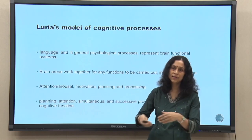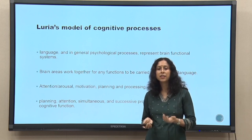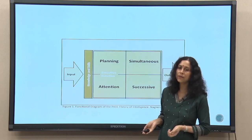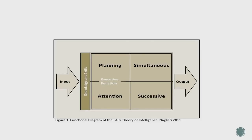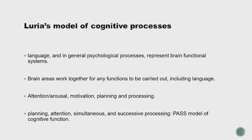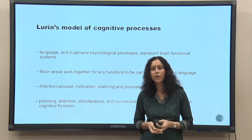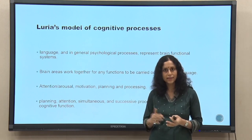The PASS model refers to Planning, Attention, Simultaneous, and Successive processing — what is at the core of any psychological process, including language. The first and foremost is paying attention; Bandura also retains this. Then there is arousal — asking what is to be done — followed by motivation, planning, and processing. So there is input from the sensory organs, then processing involving sorting, analyzing, and interpreting, and then output as behavior or action.